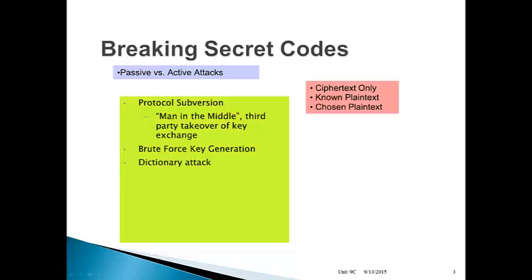A dictionary attack. Oftentimes people pick poor cryptographic keys based on known words or variations of known words or passwords. And these passwords become used to generate cryptographic keys. If you've got a dictionary, you can cycle through it. Traffic analysis — even if you can't examine or crack the cryptography, you know who's talking to whom and how much they're saying, and this can give you some very valuable information even if it's all encrypted.